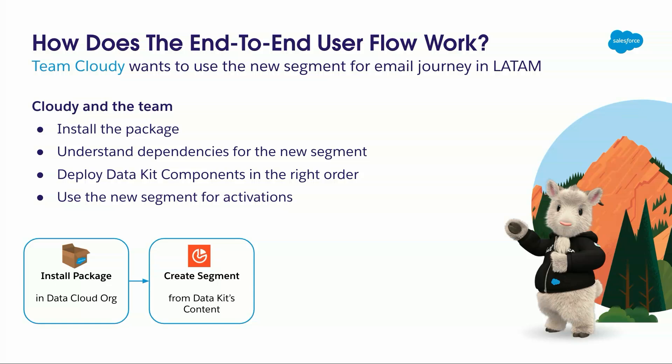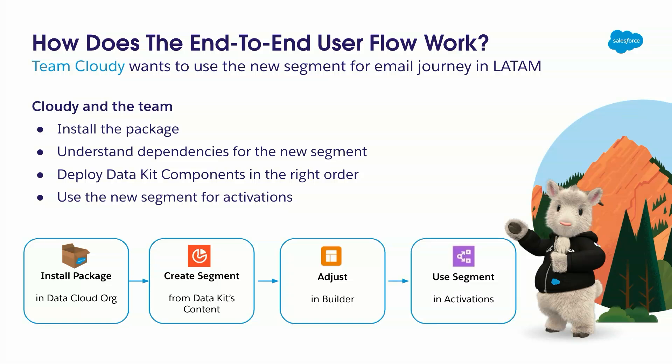That's a special thing about data kits and templates: you could actually also adjust the functionality in Builder. That's a huge difference to how packaging works in most cases, because usually packaging changes things in your org immediately and it starts working in a different way — not with data kits. After that you can use your segment in your activations and you are done.